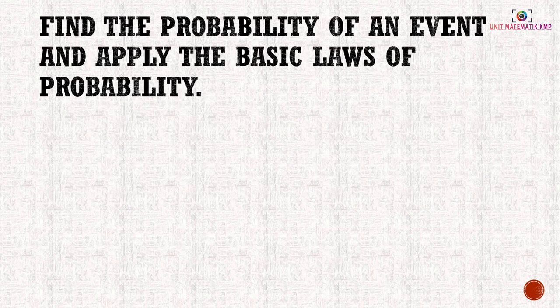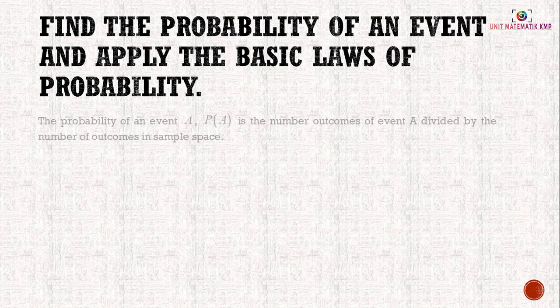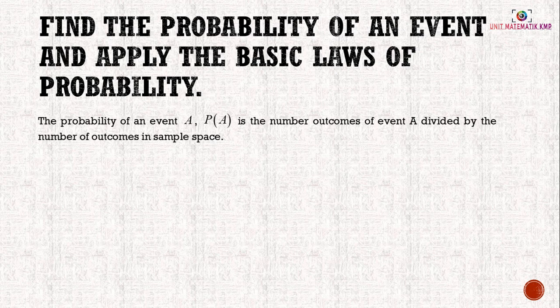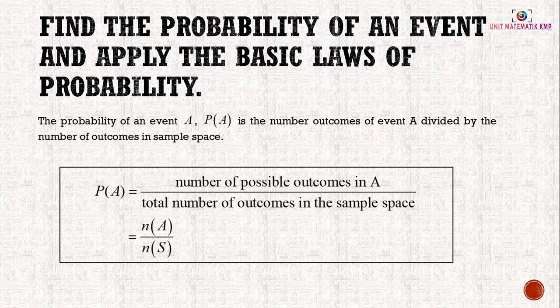Now, to find the probability of an event and apply the basic laws of probability: the probability of event A, P(A), is the number of outcomes of event A divided by the total number of outcomes in the sample space.